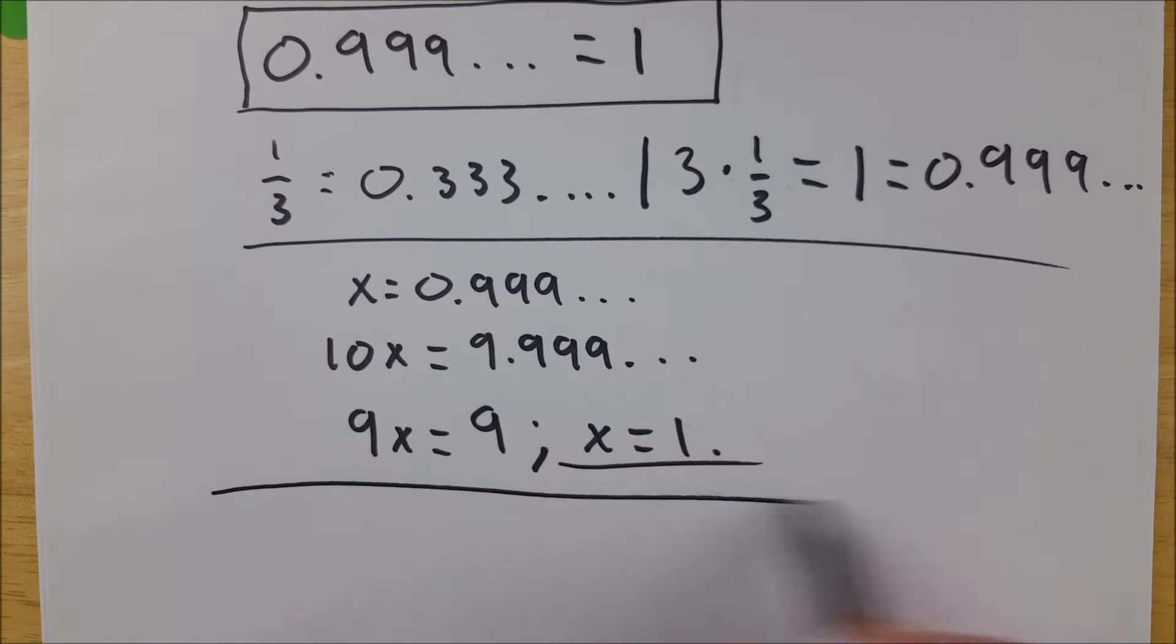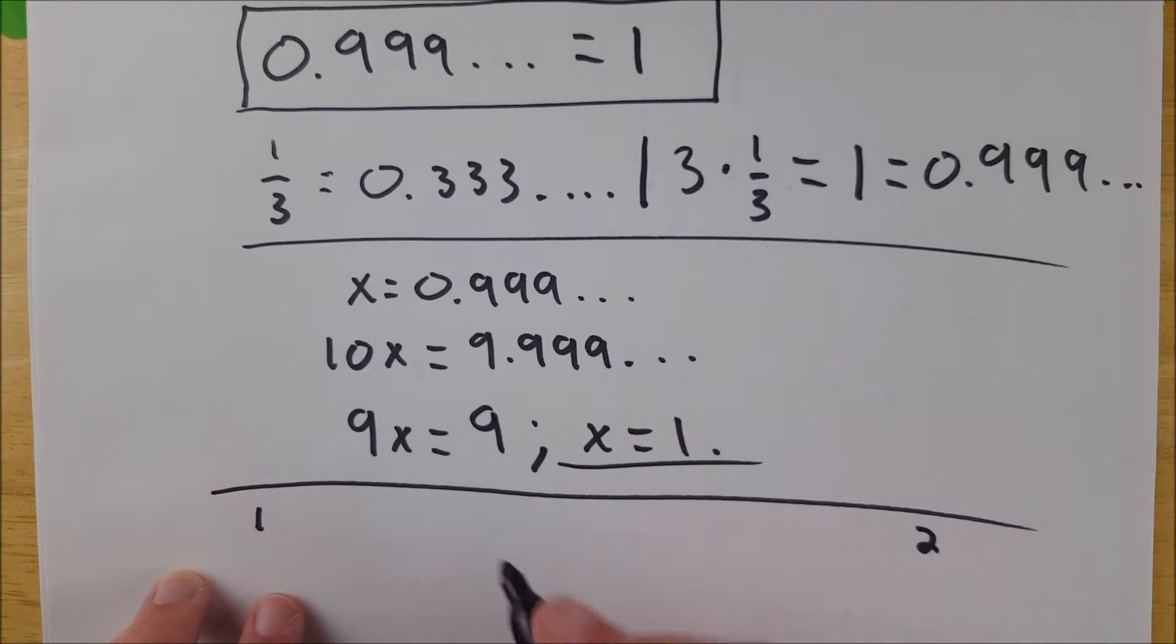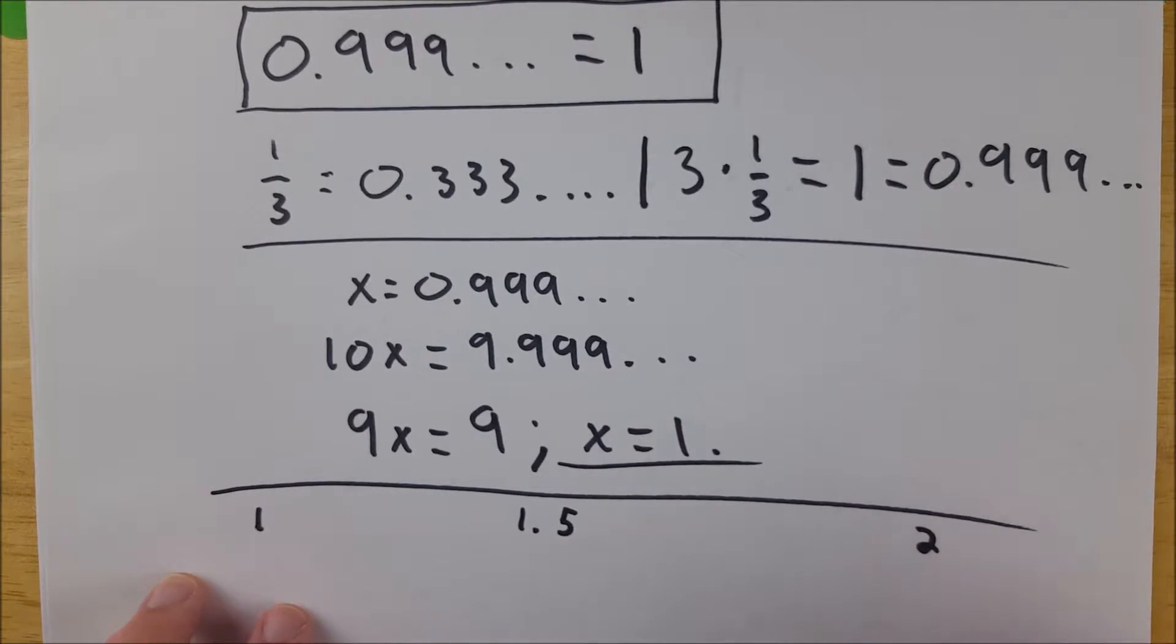So this next one isn't really a proof per se, but it is an explanation that I think is helpful. So let's say you've got the numbers 1 and 2. You know that these are different numbers, right? But how do you know? Well, you can find a number that is in between those two numbers, right? Say we pick 1.5. 1.5 is between 1 and 2.